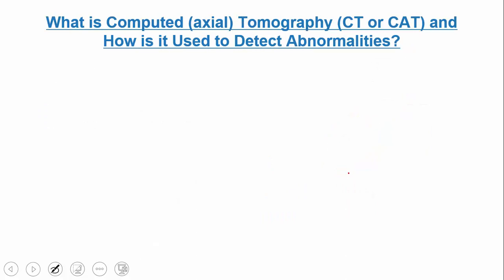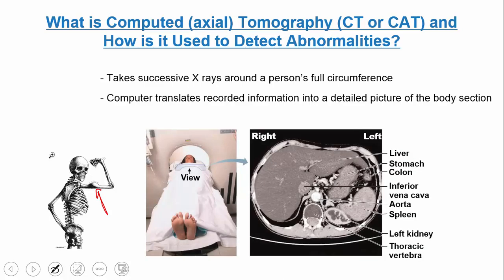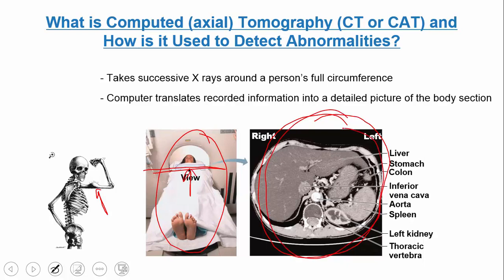This also relies on x-ray technology — something called computed axial tomography, or a CT scan or CAT scan. What this is: you take a bunch of x-rays around a person's circumference from different angles, and you put those together to construct an image, getting a detailed picture of a certain section of the body — essentially x-rays on steroids. You can see someone entering the machine, and by taking this series of x-rays from different angles, you can reconstruct a transverse cut through the individual and get a nice cross-sectional image.